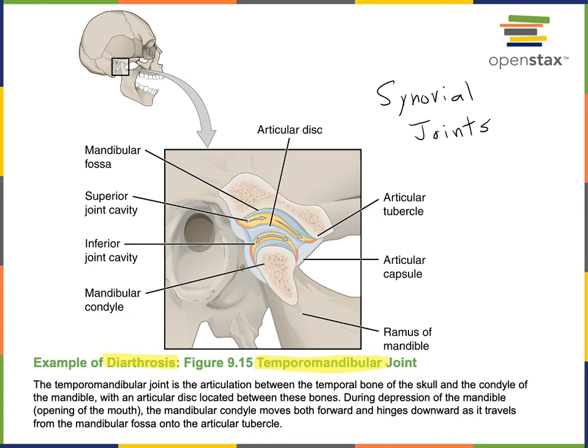Synovial joints share the same structure: an articular capsule of fibrous connective tissue that surrounds a joint cavity filled with synovial fluid. The inner layer of the articular capsule is the synovial membrane, which produces this synovial fluid. All diarthroses are synovial joints — diarthrosis is the functional category and synovial joint is the structural category.